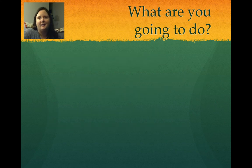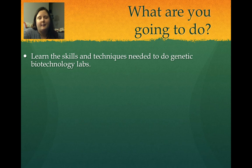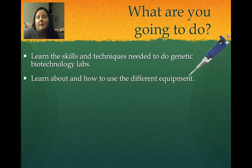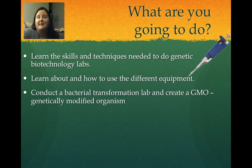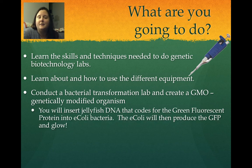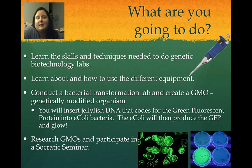In our biotechnology unit, you will first learn the skills and techniques needed to do genetic biotechnology labs, including how to use equipment such as a micropipet. You will also conduct a bacterial transformation lab, transforming bacteria by inserting DNA from another organism into it, creating a GMO. Specifically, you'll insert jellyfish DNA that codes for the green fluorescent protein into E. coli bacteria, causing it to glow green. After that, you'll research genetically modified organisms and participate in a Socratic seminar.